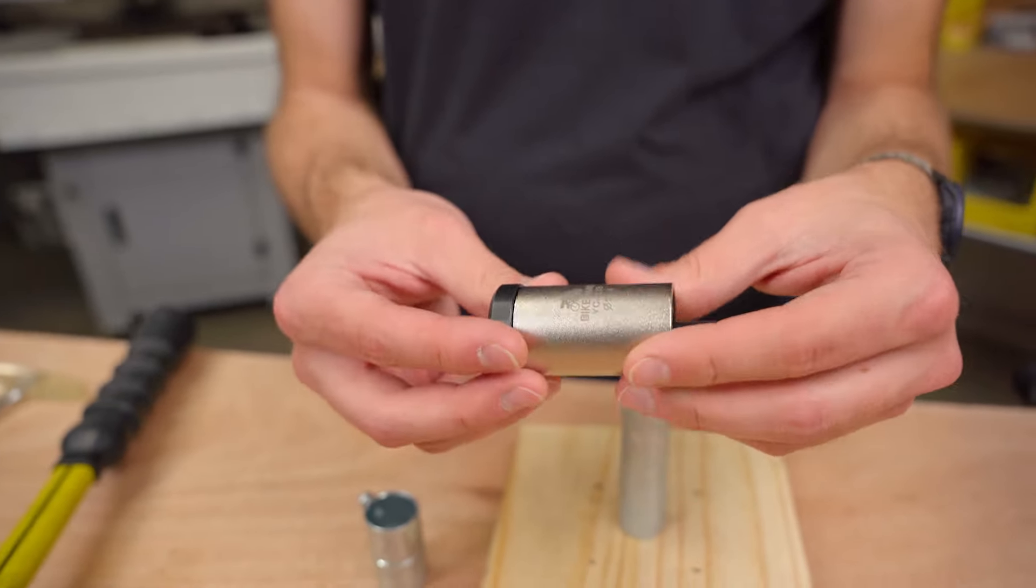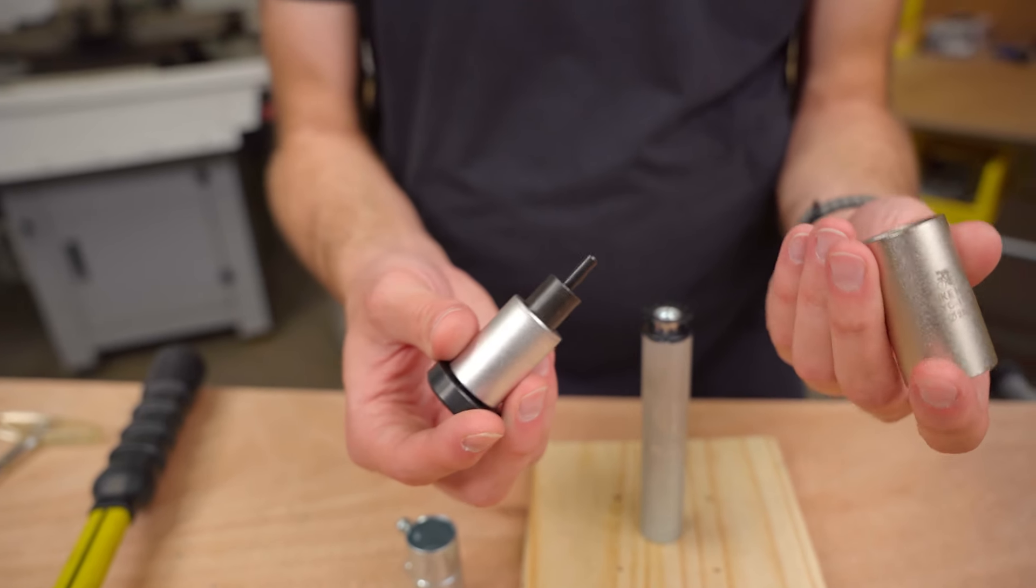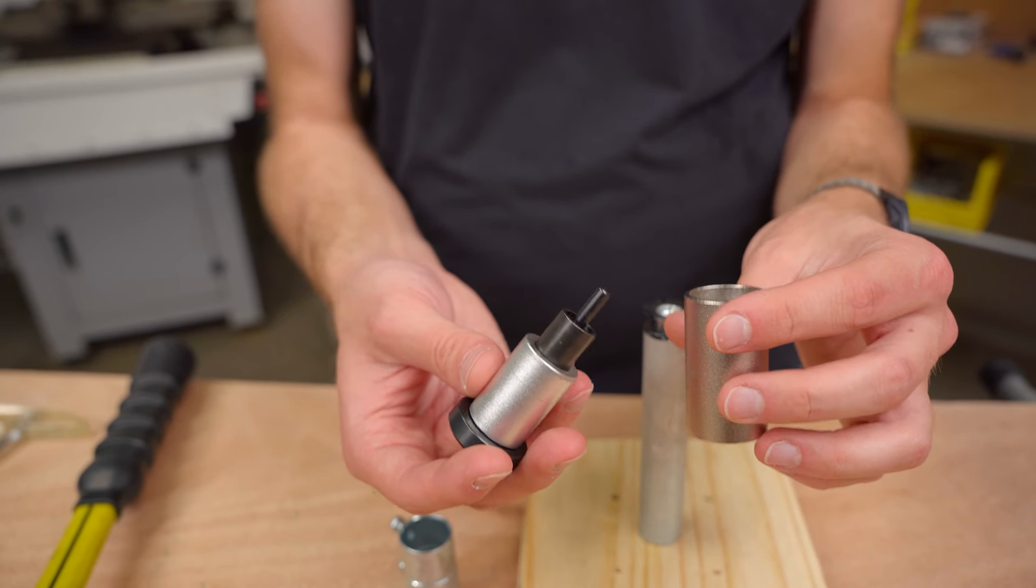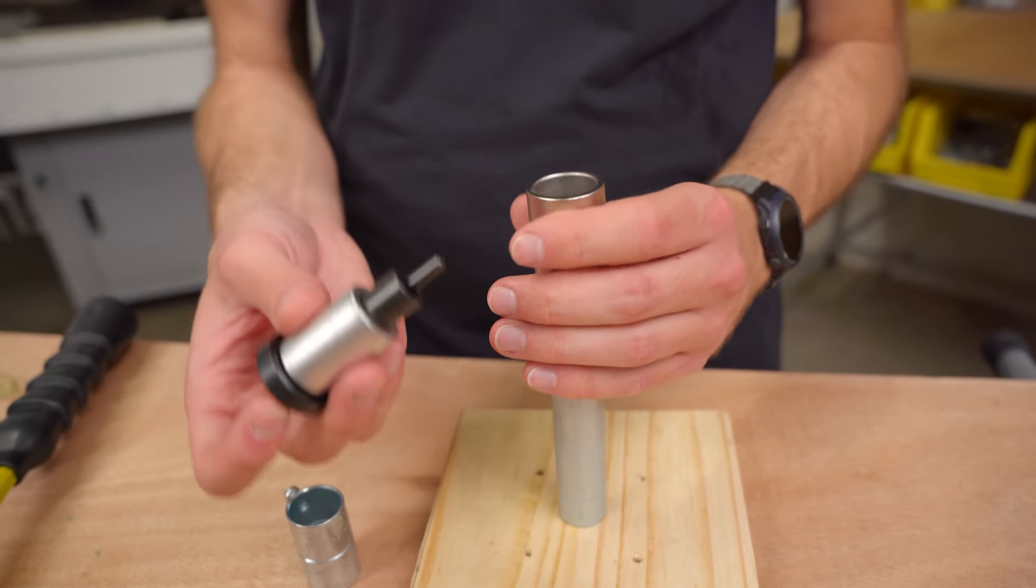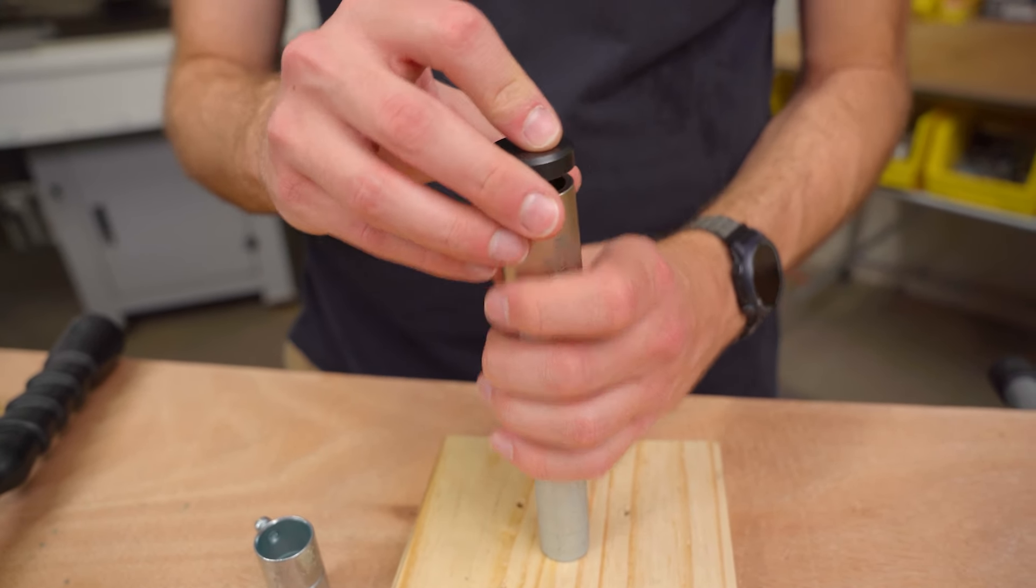Fast forward to recently, Stewart actually sent a link to this one, which is made for a different size bike fork, but it fits EMT conduit perfectly so you don't have to use any kind of shim or anything like that.